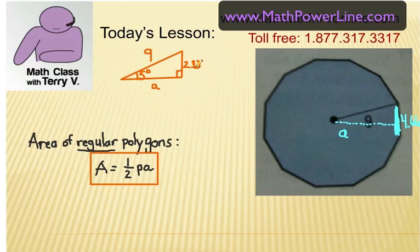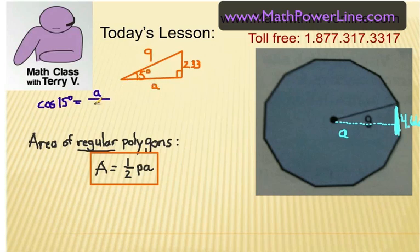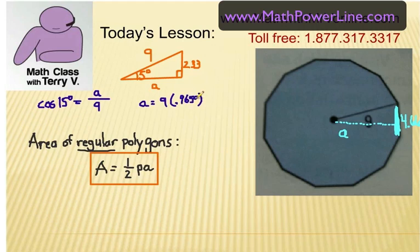Going back to the right triangle: half the side is 2.33 and the hypotenuse is 9 (the radius). We use the cosine function. Cosine of 15° equals the adjacent leg A (the apothem) over the hypotenuse. Cross-multiplying: A = 9 × cosine(15°). The cosine of 15° is 0.9659, so A equals 8.7, rounded to one decimal place.